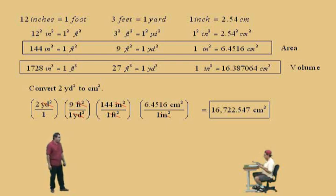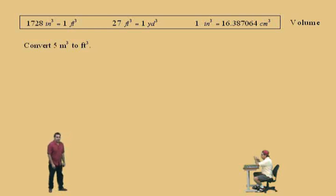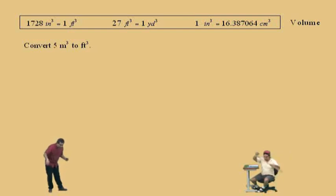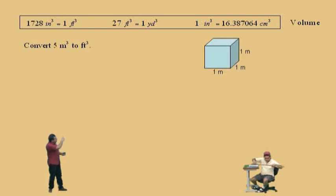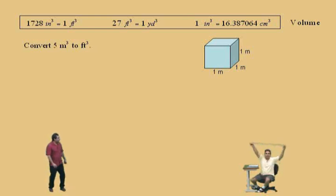We've got one more problem to do — let's make it a good one. We're going to convert 5 meters cubed to feet cubed. Now, what is a meter cubed? If you want a meter cubed, you'd have to make a cubic box. There's a picture of one there, and you can see about how big that is. A cubic meter is a lot bigger than a cubic foot, so remember we have 5 of those cubic meters.